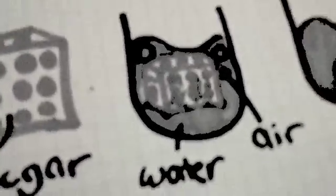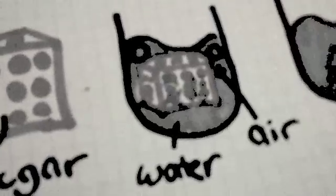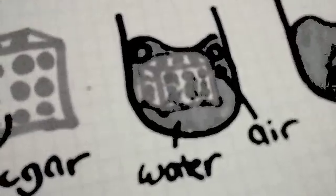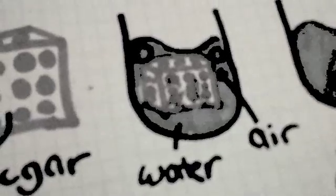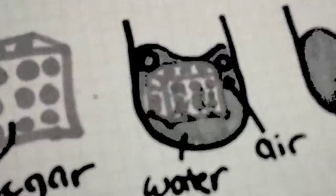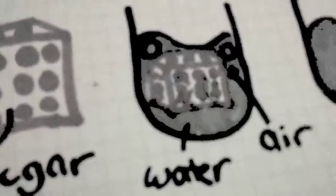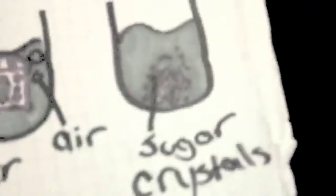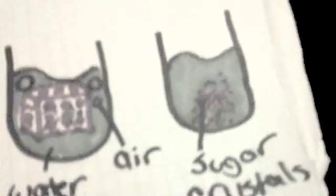So what happens is, the water makes itself into the sugar cube and it replaces itself with the, it takes the space of the air bubbles. So the air bubbles go up and the water takes the air's place. And eventually, it collapses and the sugar cube turns into sugar crystals.